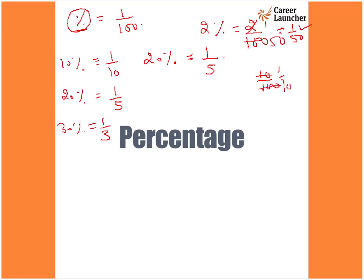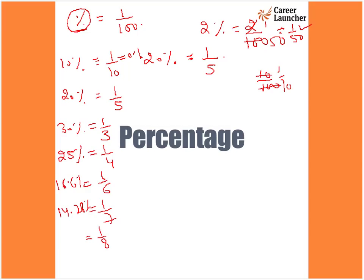1 by 10 means 0.1. 20 percent is 1 by 5. 30 percent is 1 by 3. Now, 1 by 4 is 25 percent. 1 by 6 is 16.67 percent. 1 by 7 is equivalent to 14.28 percent. Similarly, 1 by 8 is equal to 12.5 percent. Whatever percentage values we get, they are equivalent to the corresponding fraction. 1 by 9 is equivalent to 11.11 percent. 1 by 10 is 10 percent.